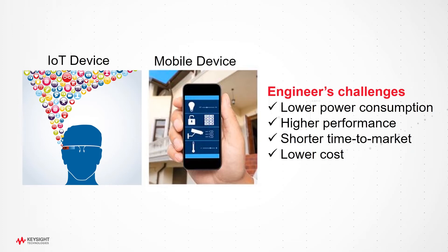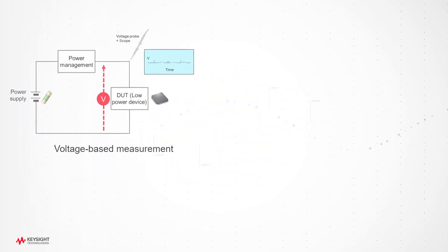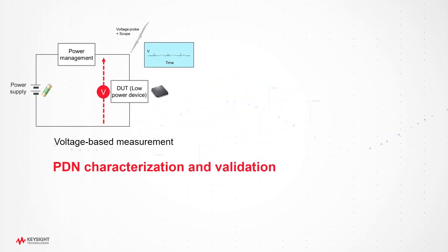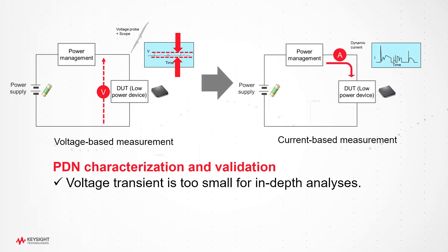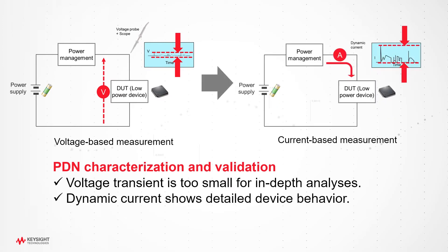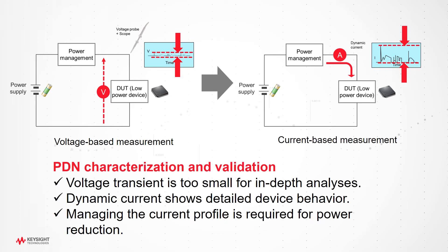The power delivery network's dynamic current characterization and validation are one of several key evaluations. However, in-depth analysis have become difficult due to low voltage transients. In this case, current waveforms can reveal your device's dynamic current behavior in detail. For more reduction in power consumption, managing the current profile is important.